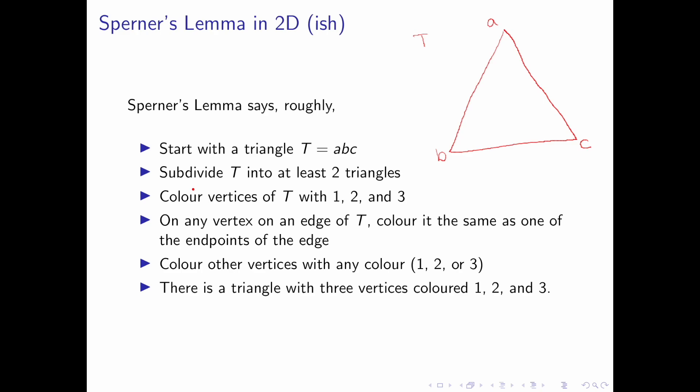We subdivide T into at least two triangles. So in the simplest case, we have a subdivision like this. We will go for a more complicated example. So this would be a triangulation of T. We have divided T into multiple triangles.